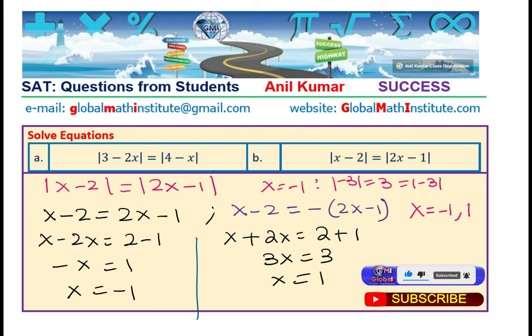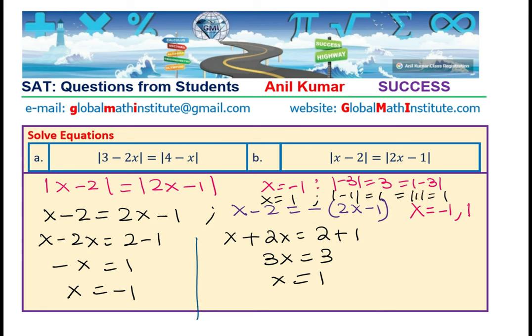Similarly, if I put 1 here, so if I put x equals to 1, let me just change the ink here, squeeze it in. So, then also, we have minus 1, which is 1 and 2 minus 1 is absolute value of 1, which is also 1. So, both sides are equal. Do you see that?